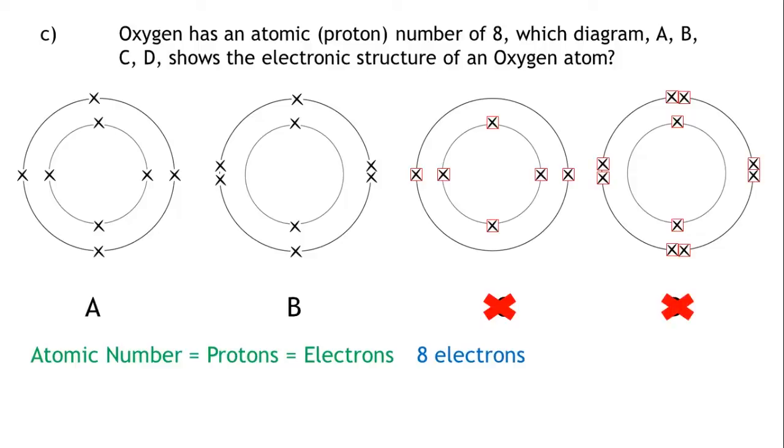What else do we know? We know that the first shell of an atom can only hold a maximum of two electrons. This means we can eliminate diagram A because it has four electrons in its first shell. Therefore, diagram B shows the correct electronic structure of an oxygen atom. It has two electrons in the first shell and six electrons in the second shell, making up eight electrons.